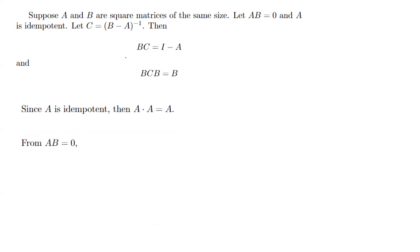Since C equals (B minus A) inverse, the inverse of C equals B minus A. We multiply (I minus A) by the inverse of C, which is B minus A. So (I minus A)(B minus A) should equal B. We are using only the fact that B minus A is invertible — we are not assuming A or B individually are invertible.